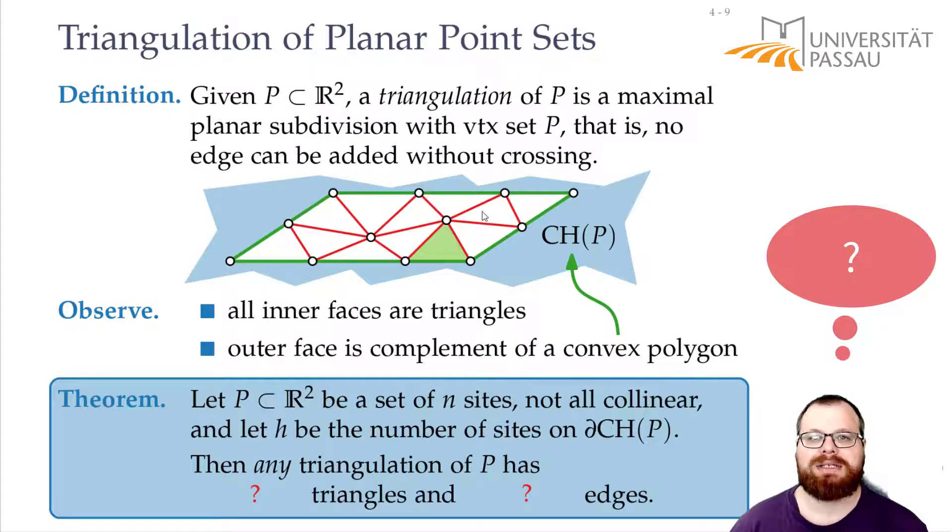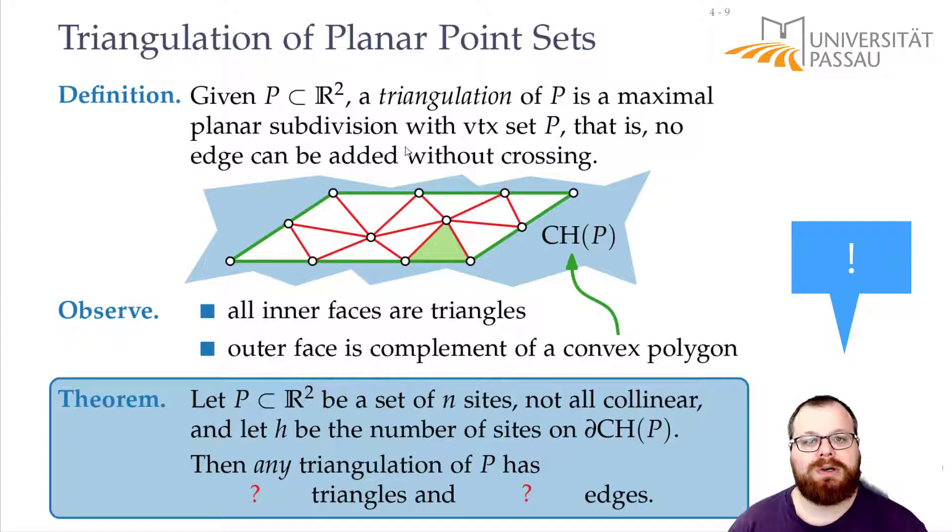Well, this is a planar subdivision so it's a planar graph. All the interior faces are triangles and we know from Euler's polyhedra formula if all the faces are triangles then we have exactly 3n minus 6 edges. That's for any maximal planar graph. Now there's one face that's not a triangle which is the outer face.